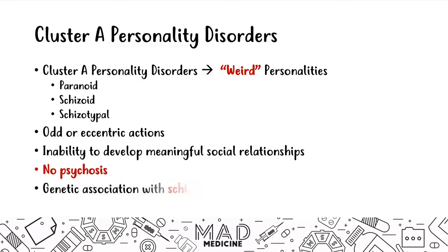There is a genetic association with schizophrenia. I simply remember this by thinking about the two Cluster A personalities — schizoid and schizotypal — and both of them are very close to the word schizophrenia. Therefore, there is a genetic association with schizophrenia. Just remember there is an association.